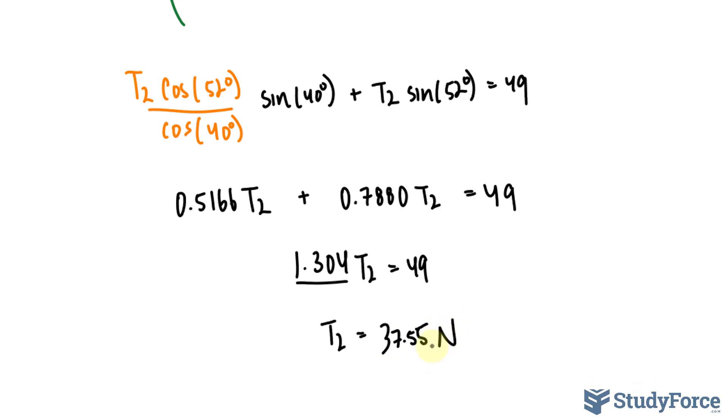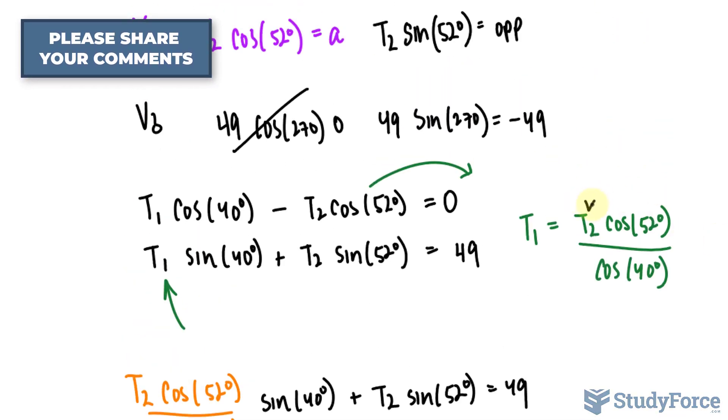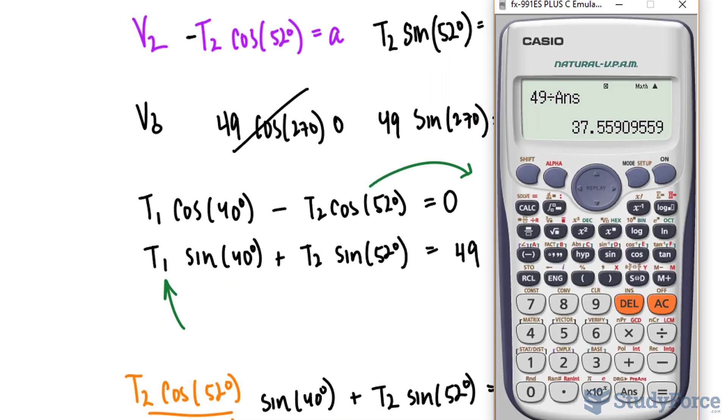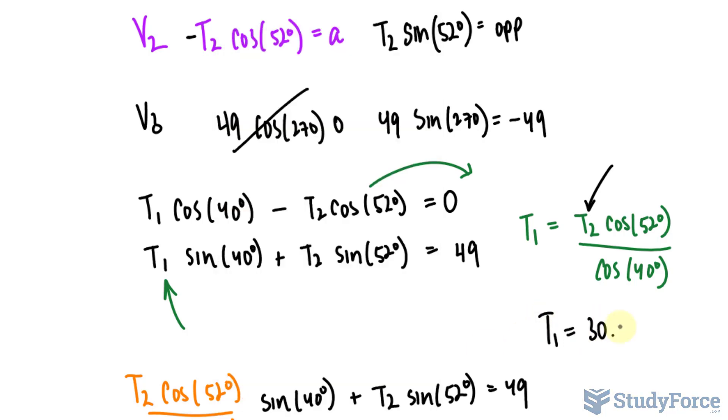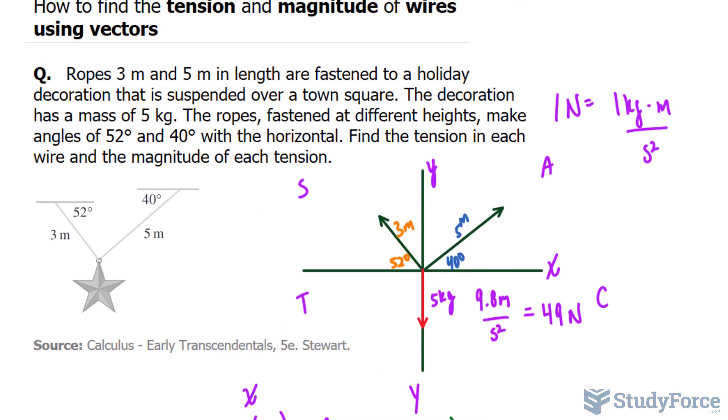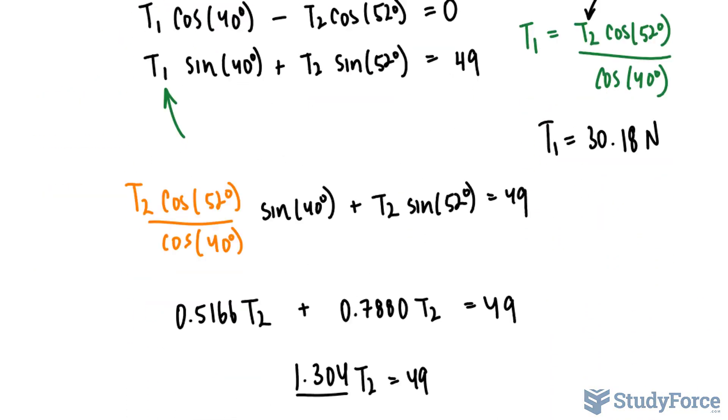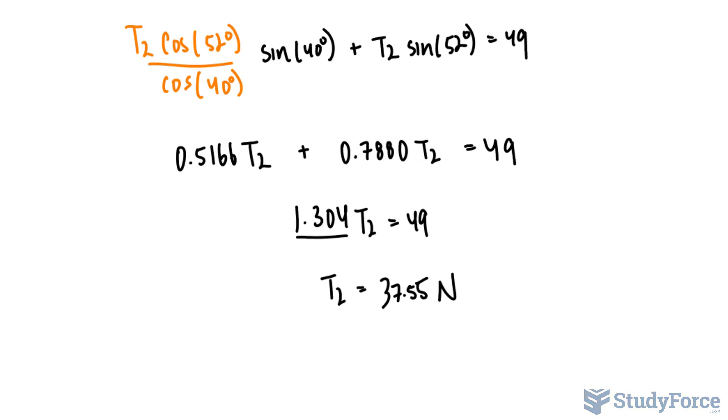Now keep in mind that I'm not taking into account significant figures here, so make sure that you follow your teacher's instructions when you do this. To find T sub 1, I'll take this number now and substitute it right there. So the number on my screen times cosine of 52 divided by cosine of 40. The second wire has a tension of approximately 30.18 newtons. So to answer this question, the tension of wire 1 and wire 2 are 30.18 and 37.55 respectively.